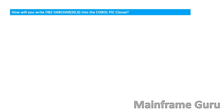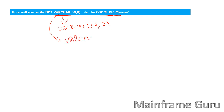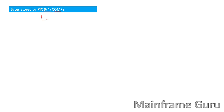The next question asks how to write DB2 VARCARE(50, 0) in COBOL PICTURE clause. This question format is wrong — there is no VARCARE with two parameters like that in DB2. The correct type would be VARCHAR(50) only, which maps to PIC X(50) in COBOL. The format DECIMAL(50, 0) exists but not VARCARE(50, 0). Additionally, PIC 9(4) COMP stores two bytes.